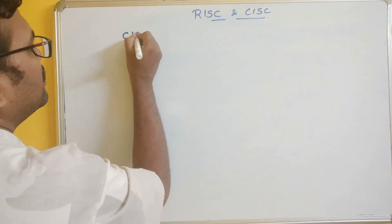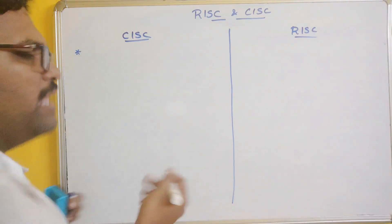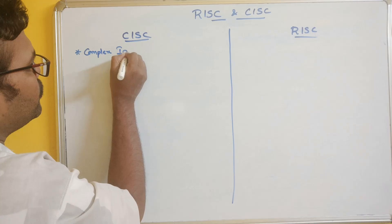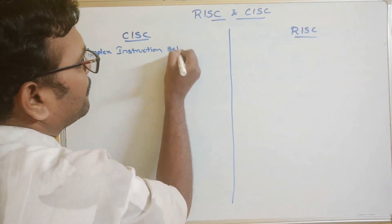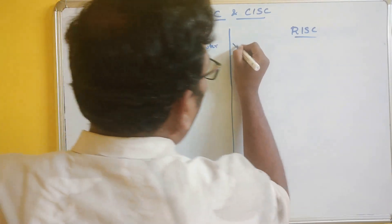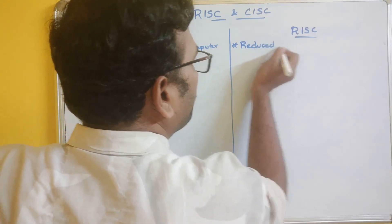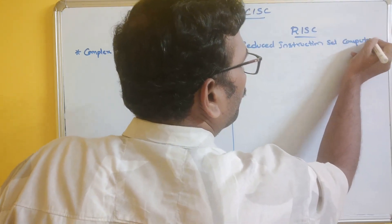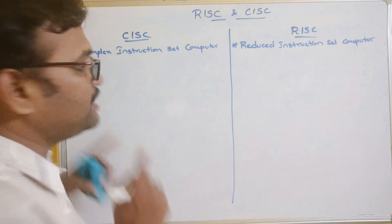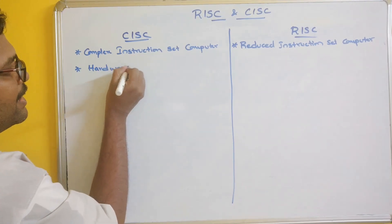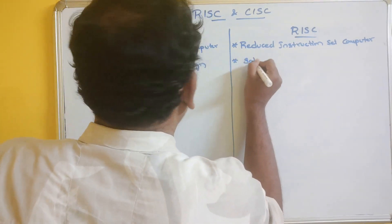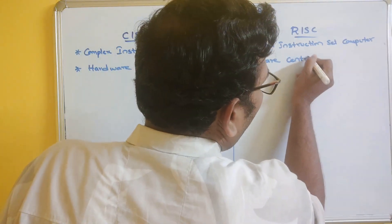I will represent CISC here and RISC here. The first difference is the abbreviation: CISC is Complex Instruction Set Computer, and RISC is Reduced Instruction Set Computer. CISC is a hardware-centric design, whereas RISC is a software-centric design.